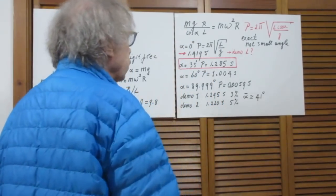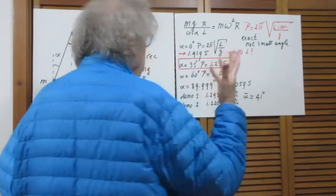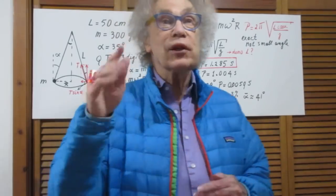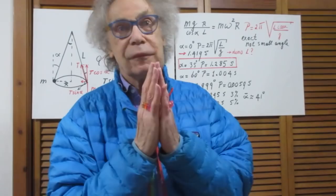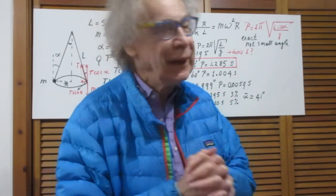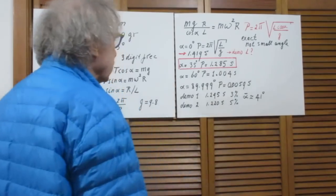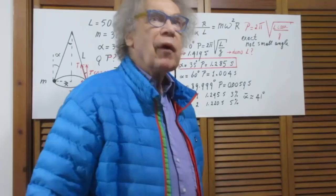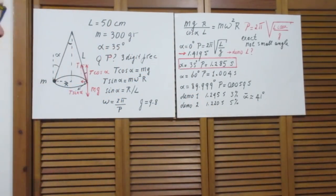Suppose alpha is 0 degrees and the cosine of alpha is 1. Then you find what you could have predicted: namely, that the period is then the period of a pendulum which swings in a plane with a very small angle. Well, alpha = 0 is as small as you can go. So it shouldn't surprise you that when you make alpha = 0, you get the classical answer we always had for a pendulum swinging in a plane with a very small angle: 2π times the square root of L over g.